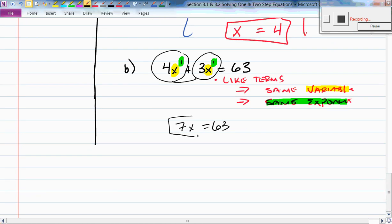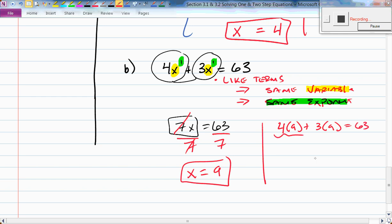Now, what am I doing to my variable? I am multiplying by 7. What's the inverse of multiplying by 7? Dividing by 7. You guys got it. Therefore, x is 9. You are correct. Let's check. Is four times 9 plus three times 9 equal to 63? Four nines is 36. Plus three nines is 27. That's 63. It sure does.